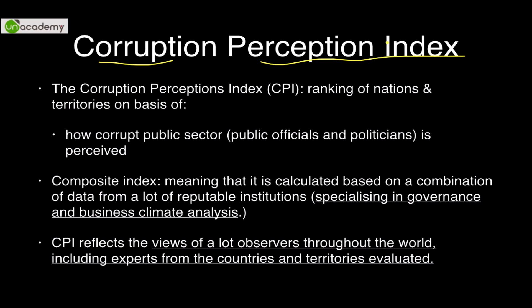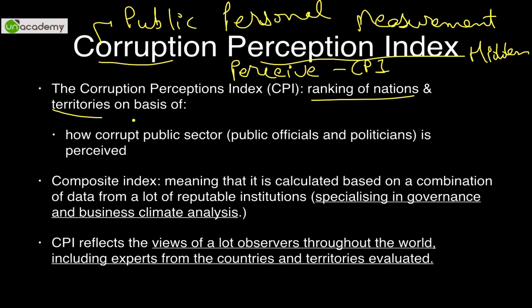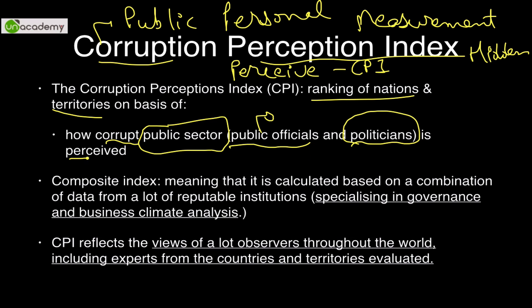What is the Corruption Perception Index? Corruption is defined as the use of public power for personal gain. It is not a corruption measurement index but a perception index, because real corruption is always hidden and impossible to directly measure. CPI is the ranking of nations and territories based on how corrupt the public sector — including bureaucrats, public officials, politicians, and elected representatives — is perceived to be.